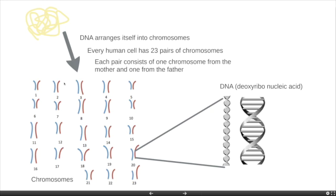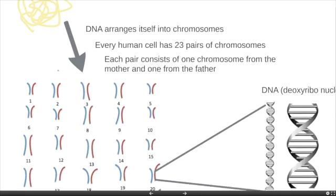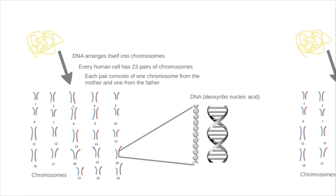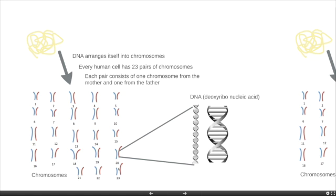You might hear the phrase that chromosomes are in your nucleus and that's absolutely fine to say, but normally it is all these long chains, which can be packaged into chromosomes. Every human cell in the body has 23 pairs of these chromosomes, and pair 23 actually determines your sex, which we'll come on to in a later video. Each pair consists of one chromosome from the mother and one chromosome from the father, and these are what contain your genetic information.